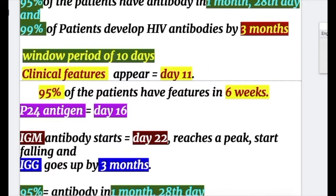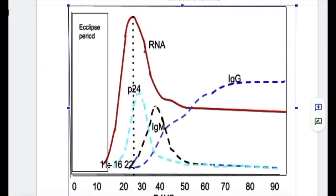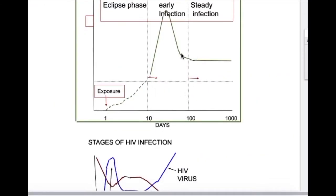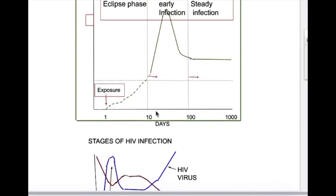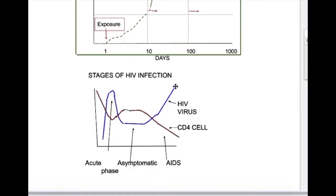The window period is 10 days. Clinical features appear on day 11, with 95% having clinical features by 6 weeks. P24 antigen appears on day 16, followed by IgM. The acute phase lasts about 2 weeks to 2–3 months, followed by a latent period of 2 to 10 years, after which viral load increases and opportunistic infections lead to death.